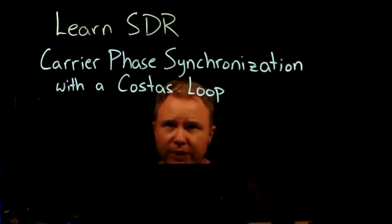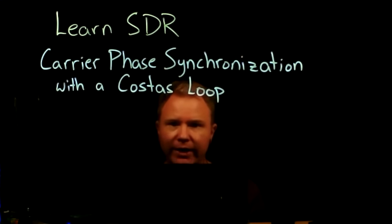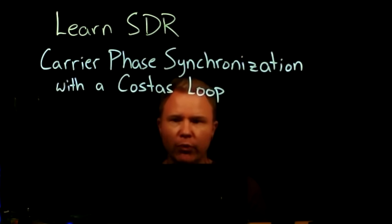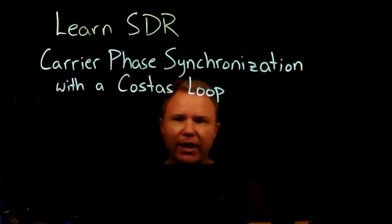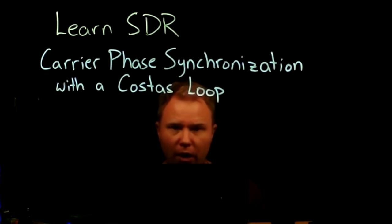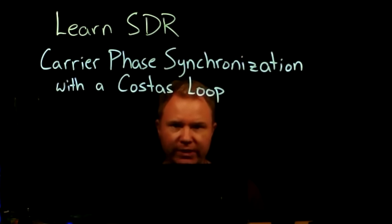Welcome back to LearnSDR with Prof. Jason. Today we're going to talk about carrier phase synchronization, and we're going to use a Costas loop, which is a GNU Radio block. After today, you'll have a complete set of tools to build a phase-coherent transmitter and receiver — BPSK, QPSK, multi-level PSK, or QAM — all of which require both timing synchronization and carrier phase synchronization.